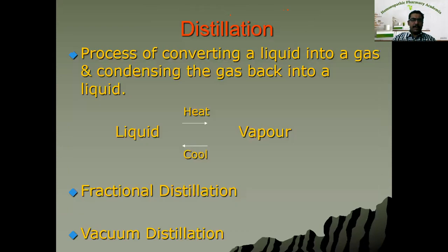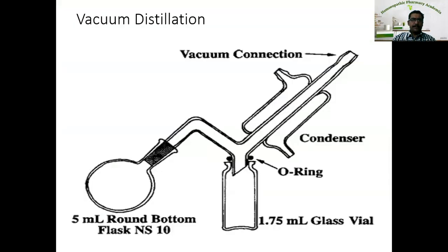Another type of distillation is vacuum distillation. Here the apparatus is connected with a vacuum generating machine. By creating a vacuum, the distillation process is facilitated and the rate of distillation is increased. That is how vacuum distillation is constructed.